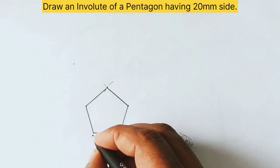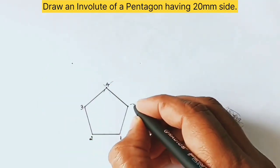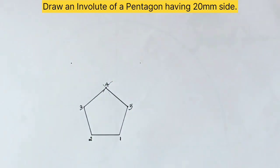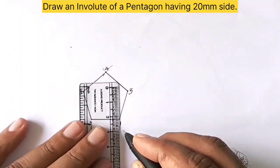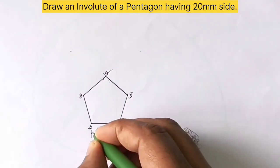Label the vertices as 1, 2, 3, 4, and 5. Give the dimensions of one side, 1 to 2, that is 20mm.